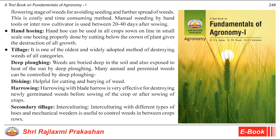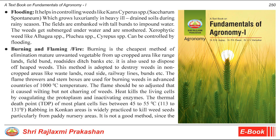Tillage: one of the oldest and widely adopted methods of destroying weeds of all categories. Deep plowing buries weeds deep in the soil and exposes them to heat of the sun; many annual and perennial weeds can be controlled this way. Disking is helpful for cutting and burying weeds. Harrowing with a blade harrow is very effective for destroying newly germinated weeds before or after sowing. Secondary tillage — interculturing with different types of hoes and mechanical weeders is useful to control weeds between crop rows. Flooding helps in controlling weeds like Cyperus spp. and Saccharum spontaneum, which grow luxuriantly in heavy, poorly-drained soils during the rainy season. Fields are embanked with tall bunds to impound water; weeds become submerged and are smothered.